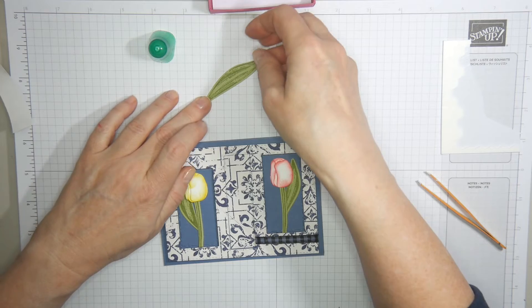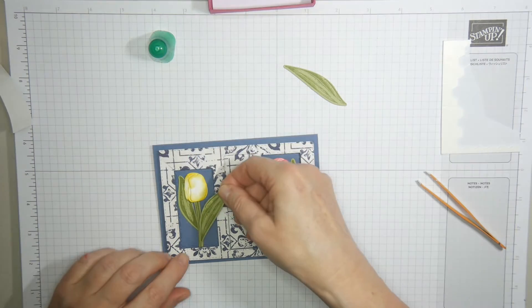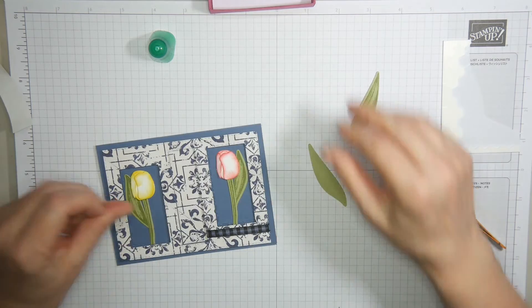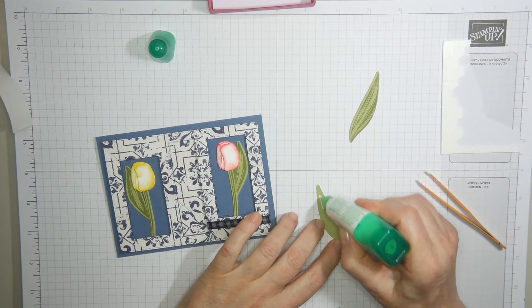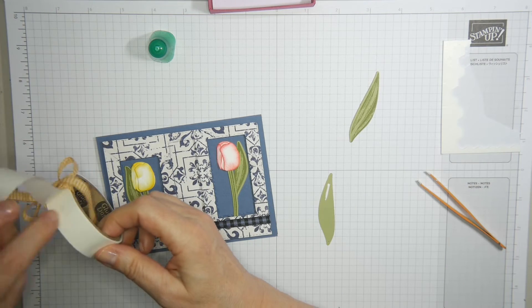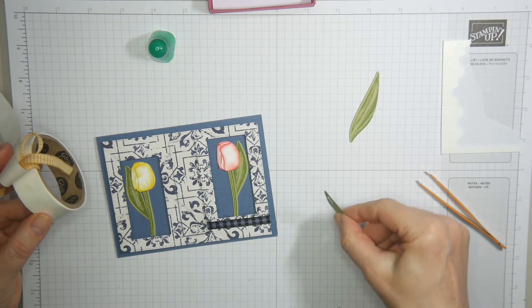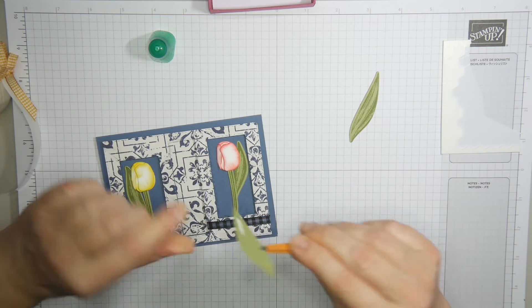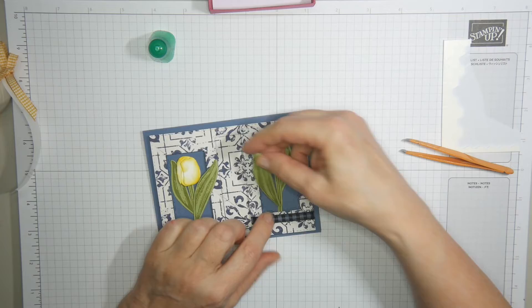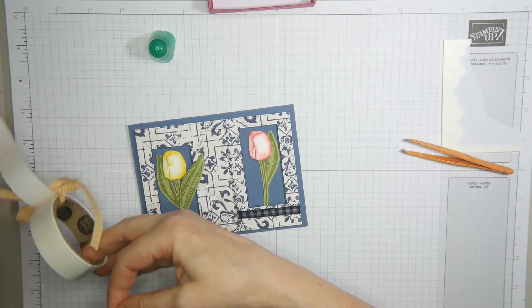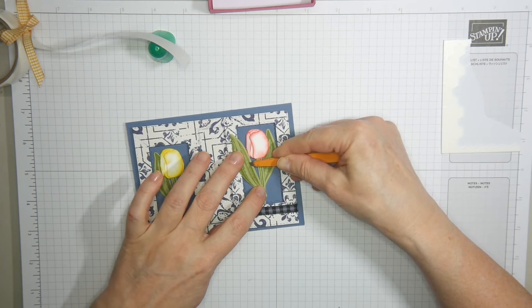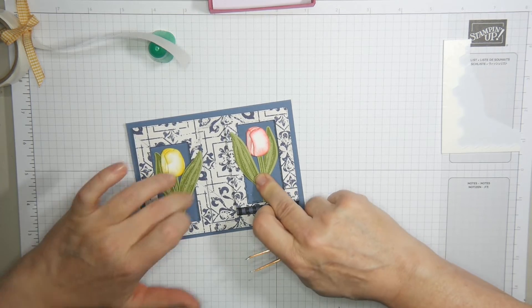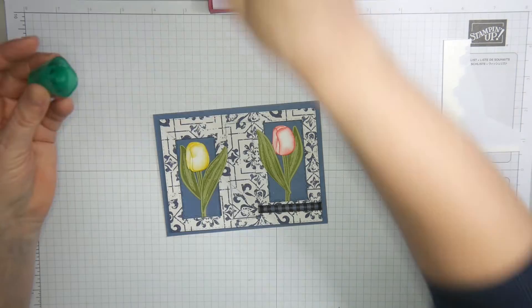And now you can stick on these leaves. One leaf goes that way and the other one goes that way. I'm using a combination of multi-purpose liquid glue and the glue dot. The bottom part you have to make sure it sticks. The glue dot will hold.